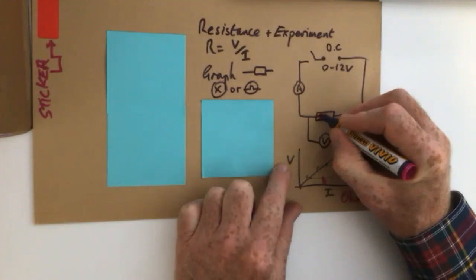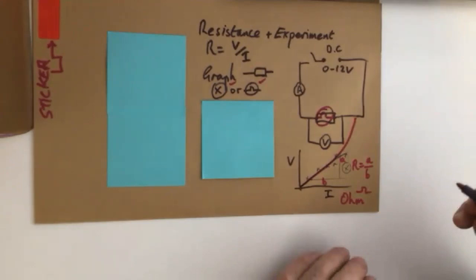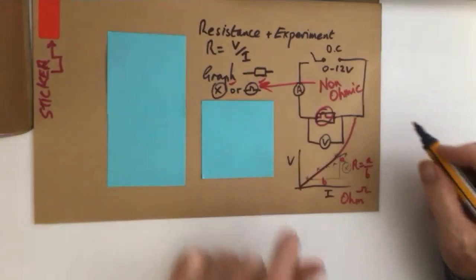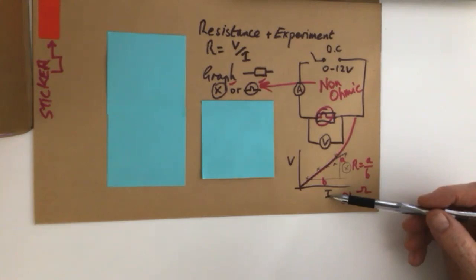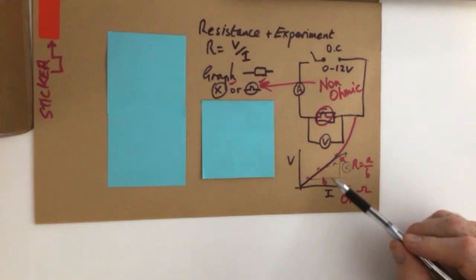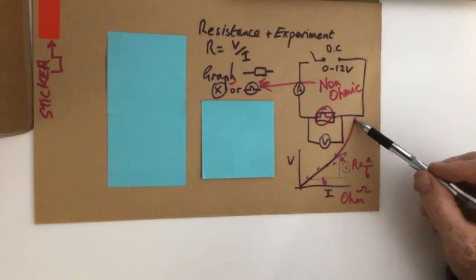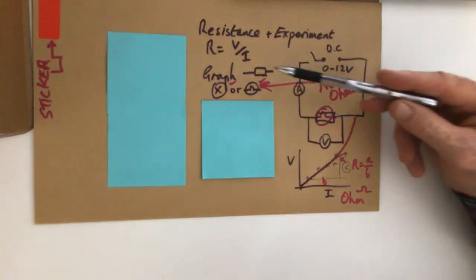But if you were to take this out and put in a lamp or a bulb, the same thing, a lamp or a bulb. Do the results again. You would end up with doing a curved line, which is non-Ohmic. So these here are non-Ohmic. All that means is it doesn't obey Ohm's law. It's not a straight line. And as it gets hotter, more current makes more heat. As it gets hotter, the lattice vibrations go up. It's more difficult for the electrons to get through. And the resistance goes up because the resistance is the slope of the graph or the gradient.